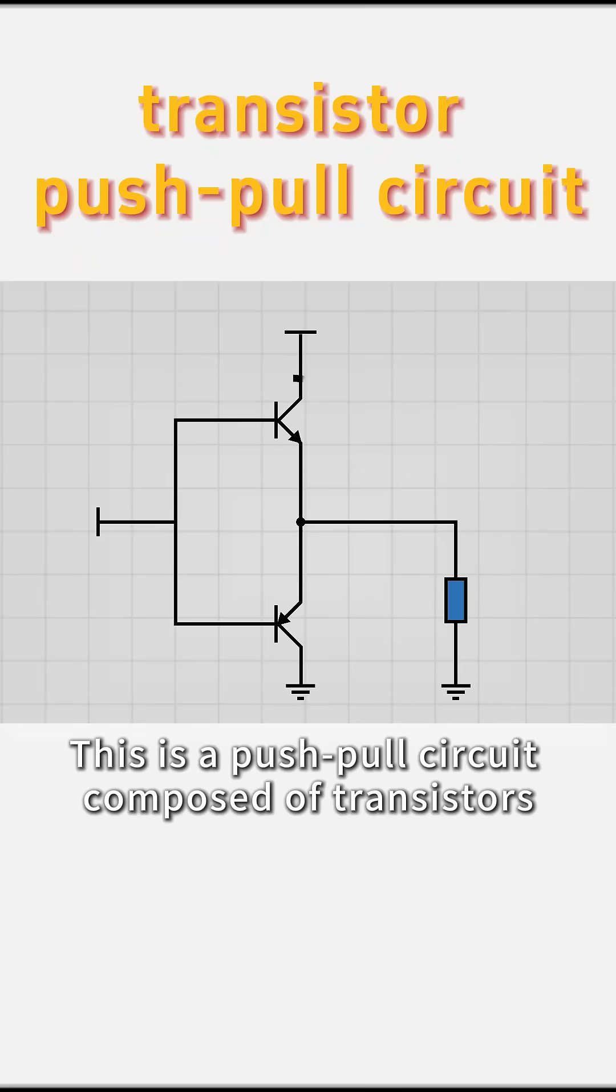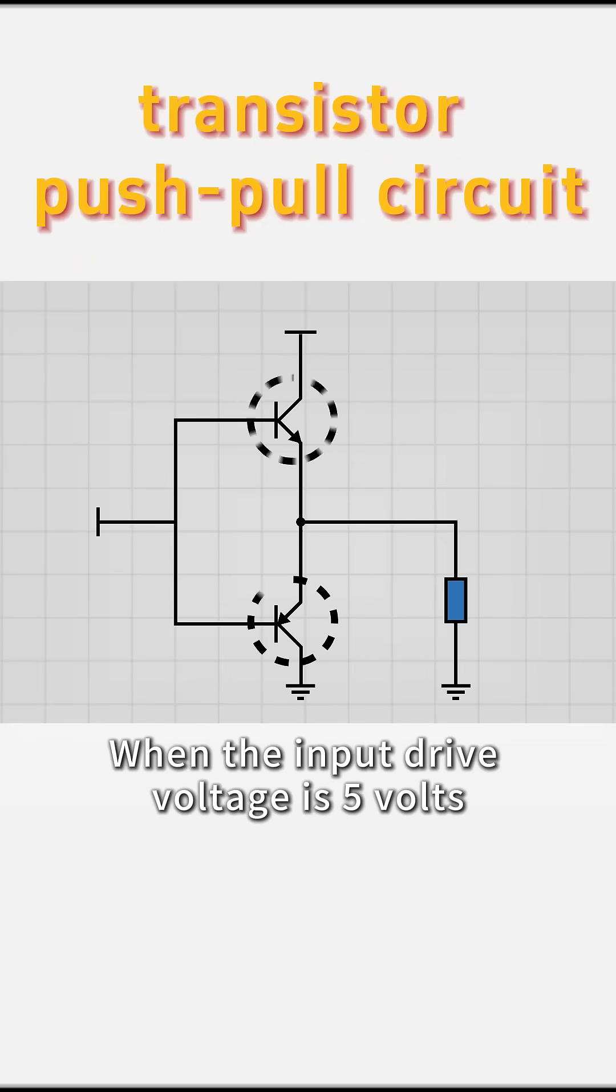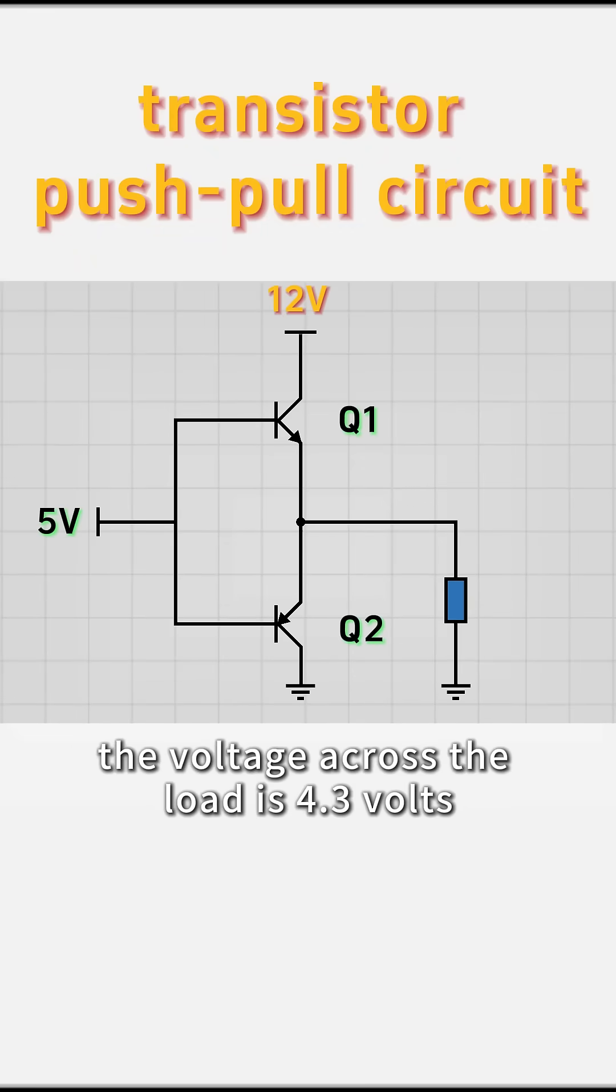This is a push-pull circuit composed of transistors. When the input drive voltage is 5 volts, the voltage across the load is 4.3 volts.